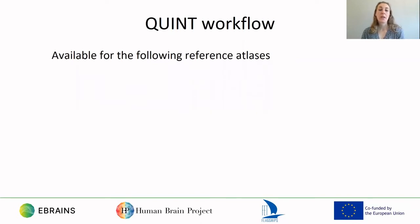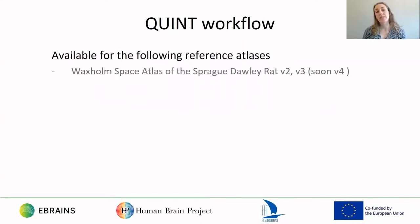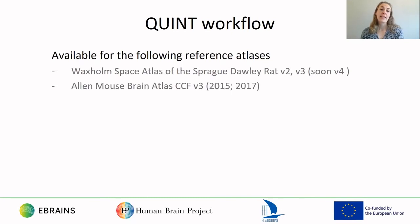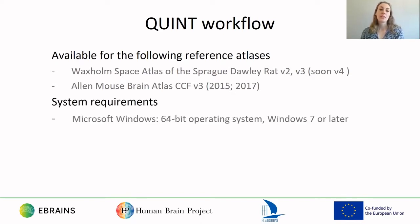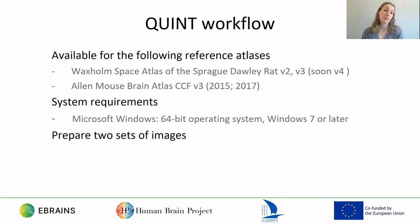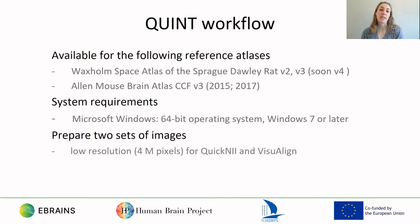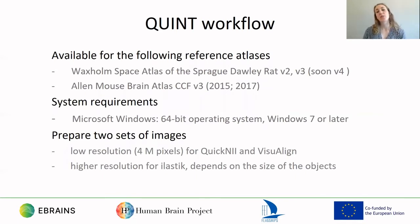So let's get going. Currently QUINT is available for the Waxholm Space Atlas on the Sprague-Dawley Rat versions 2, 3 and soon version 4, and the Allen Mouse Brain Atlas Common Coordinate Framework version 3, and we have both the 2015 and 2017 versions. The tools work on 64-bit operating systems, Windows 7 or later, and before you start you'll need to prepare two sets of images with different resolutions, one for registration to the atlas and one for extraction of your objects. The reason that you need two sets of images is because the QUINT and Elastic software have different input requirements which are described in more detail in our user manual.